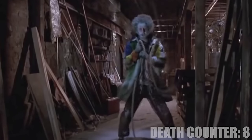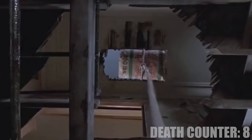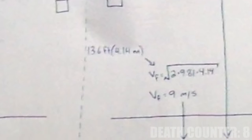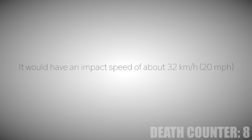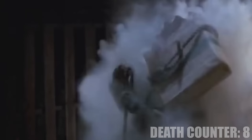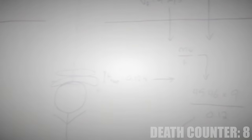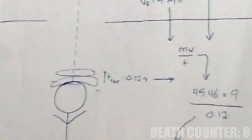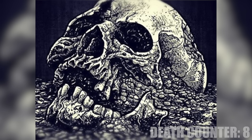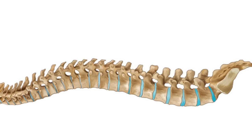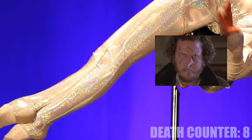Marv pulls a 100-pound bag of what I'm assuming is cement mix down onto his neck from 13.6 feet above him. It would have an impact speed of about 32 kilometers an hour, and since it takes 0.12 seconds for it to fully stop on his head, it would crush his upper half with a force of 3,400 newtons, or 760 pounds — enough to crush his skull, rip open his spine, and bend his back so far over he'd be a permanently frozen contortionist. One point.